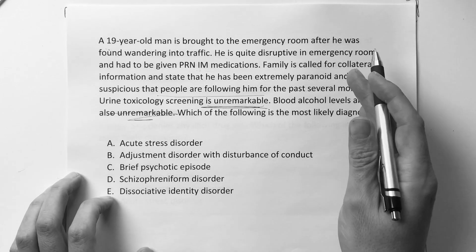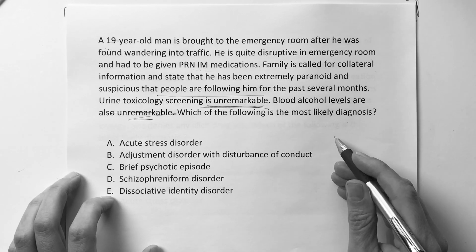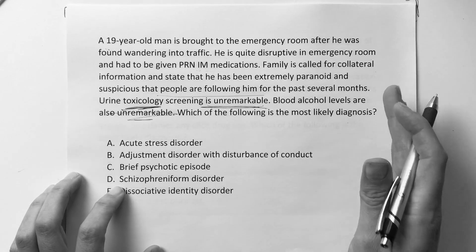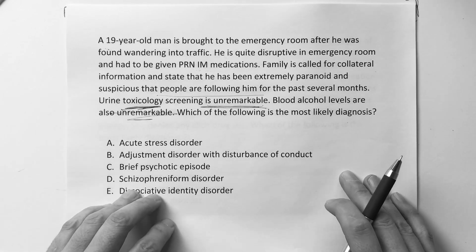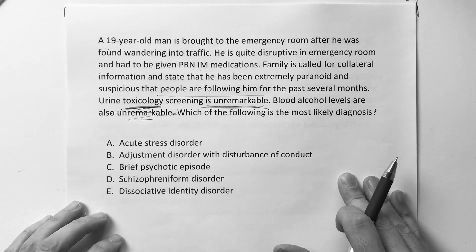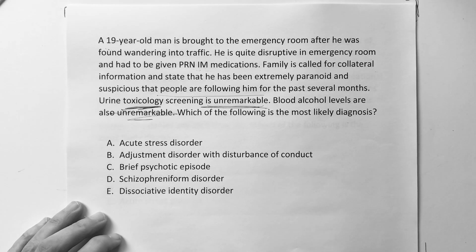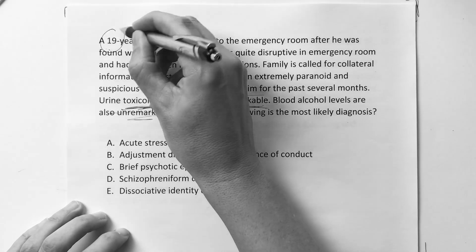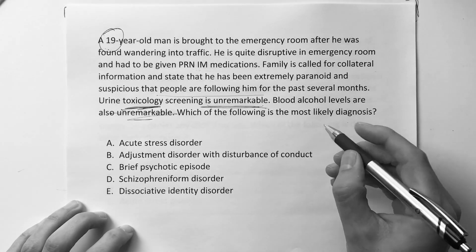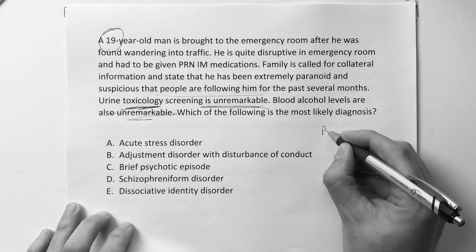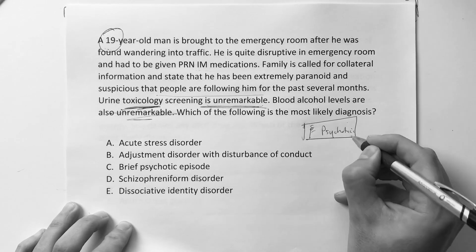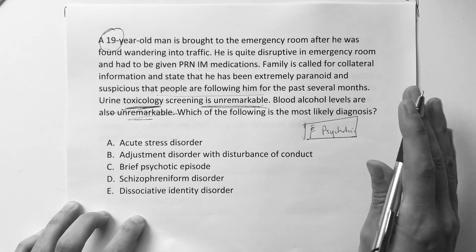The first thing you look at is the toxicology, because that excludes any type of diagnosis. If someone's high on drugs or intoxicated, you can't give them a mental health diagnosis other than a substance-induced mood disorder. So in this case, it's a 19-year-old kid, he's very agitated, urine drug screen is normal. He's in that age range for a first psychotic break, but in the psychotic category, everything is based on time.